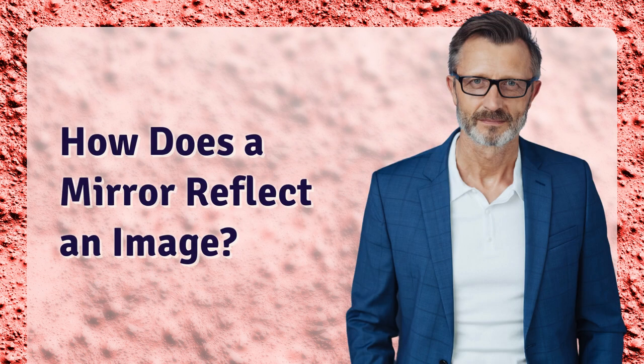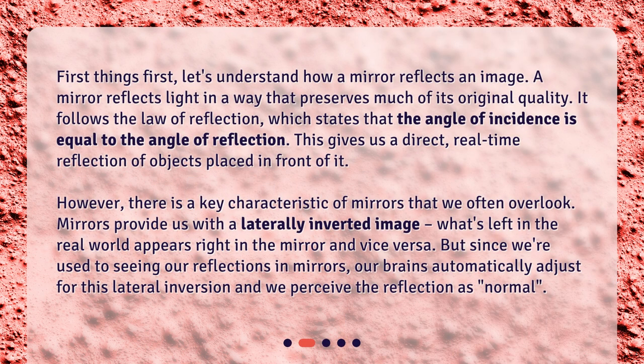How does a mirror reflect an image? First things first, let's understand how a mirror reflects an image. A mirror reflects light in a way that preserves much of its original quality. It follows the law of reflection, which states that the angle of incidence is equal to the angle of reflection. This gives us a direct, real-time reflection of objects placed in front of it. However, there is a key characteristic of mirrors that we often overlook: mirrors provide us with a laterally inverted image. What's left in the real world appears right in the mirror and vice versa. But since we're used to seeing our reflections in mirrors, our brains automatically adjust for this lateral inversion and we perceive the reflection as normal.